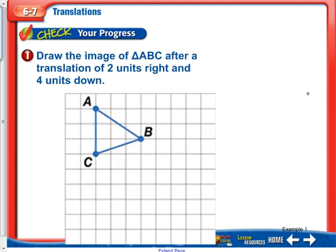For the next example, we're going to go 2 units right and 4 units down. So again, it would be X plus 2 and Y minus 4 — whenever we go down, we're subtracting. So we count 2 right and 4 down, and that's where our A prime is going to be.